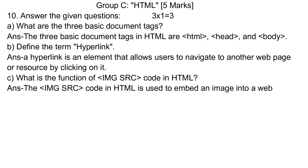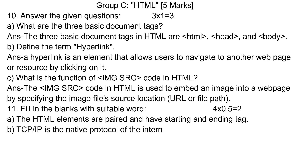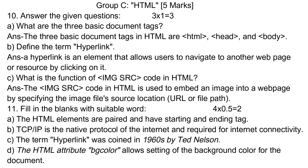Question 10. Answer the given questions. A. What are the three basic document tags? Answer: The three basic document tags in HTML are HTML, head, and body. B. Define the term hyperlink. Answer: A hyperlink is an element that allows users to navigate to another web page or resource by clicking on it. C. What is the function of IMG SRC code in HTML? Answer: The IMG SRC code in HTML is used to embed an image into a web page by specifying the image file's source location — URL or file path.